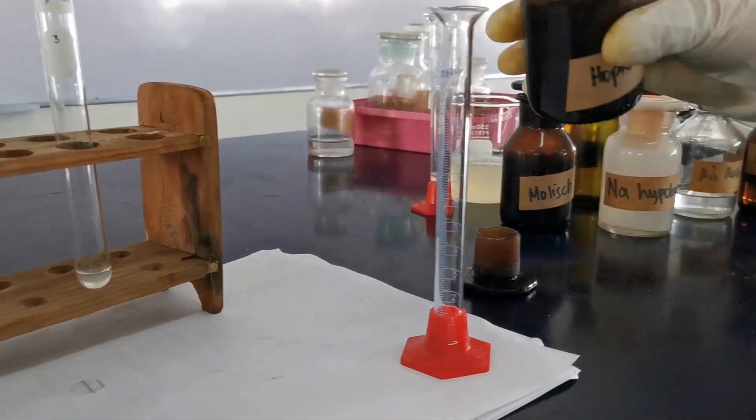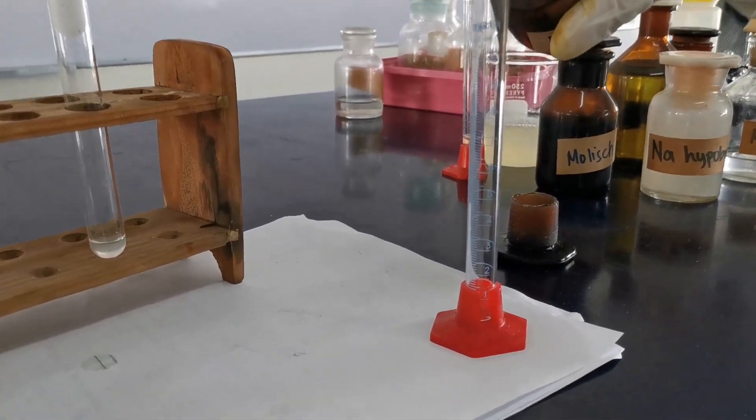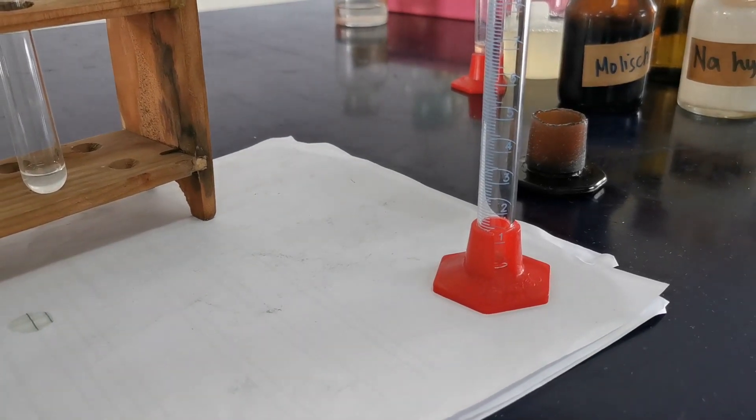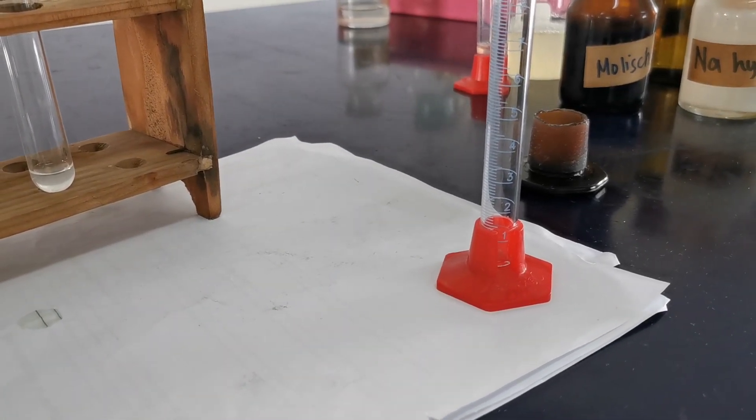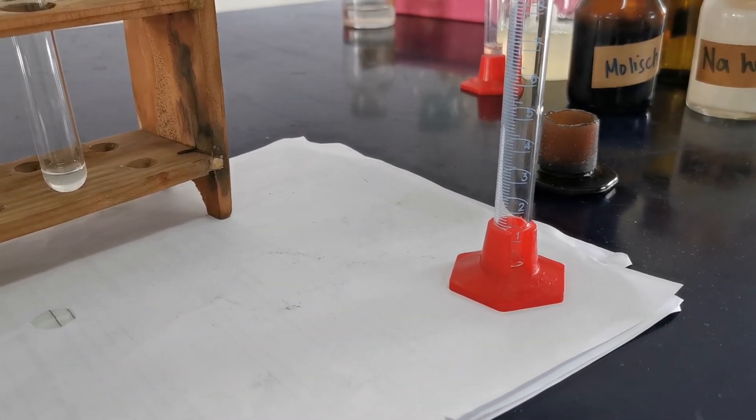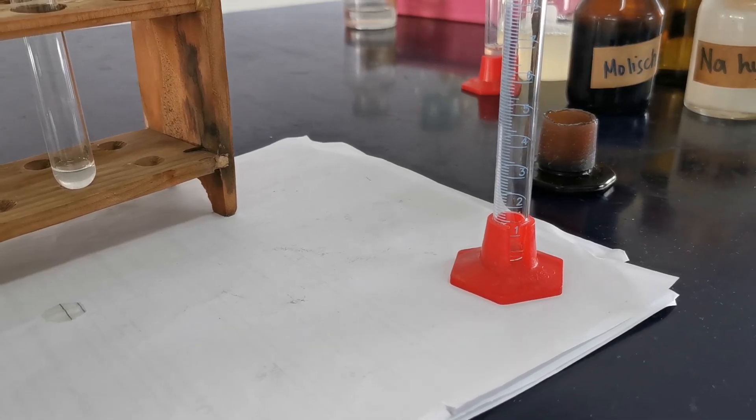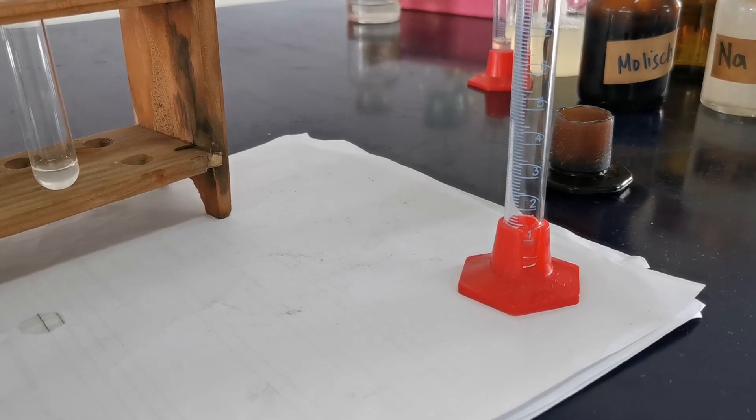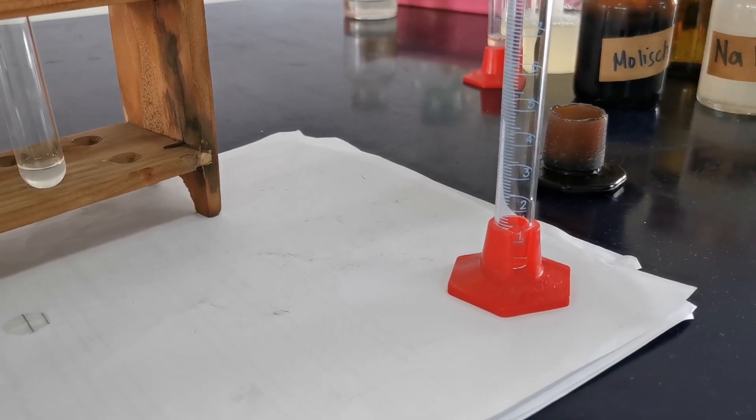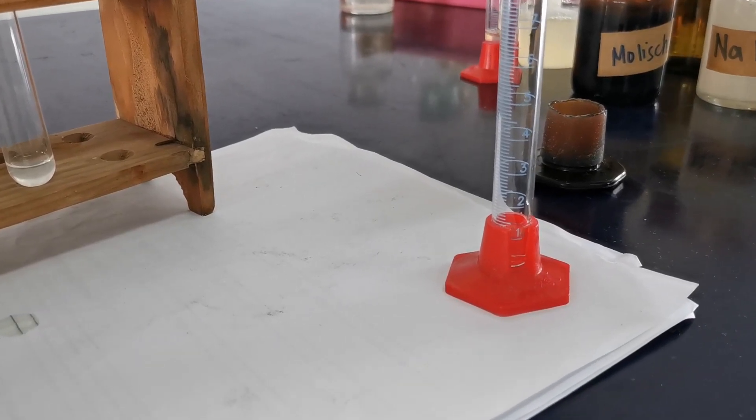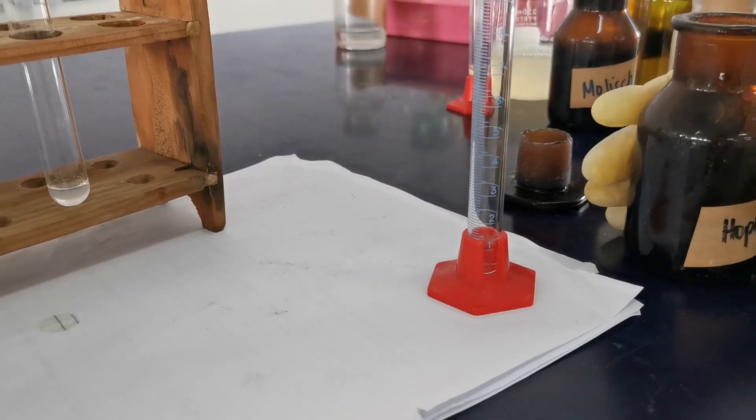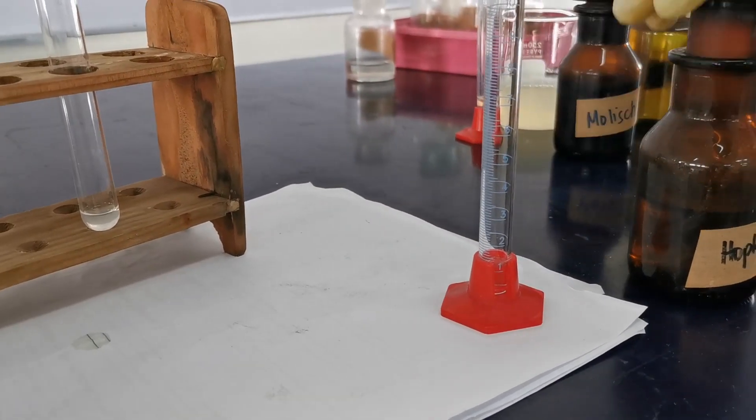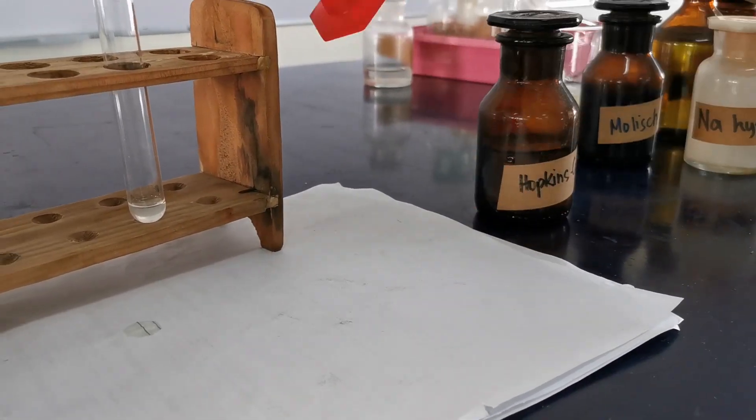Using the graduated cylinder, get 1 ml of egg albumin solution and 1 ml of Hopkins Cole reagent. Mix the two solutions.